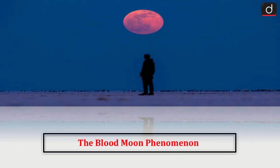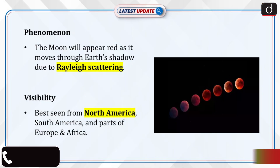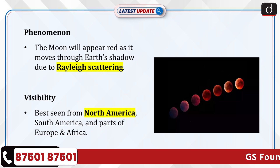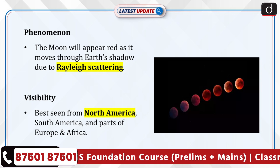Hello everyone. Welcome to the latest update program. The topic of discussion is the blood moon phenomenon. A total lunar eclipse, or blood moon, will occur on the night of 13 to 14 March 2025.